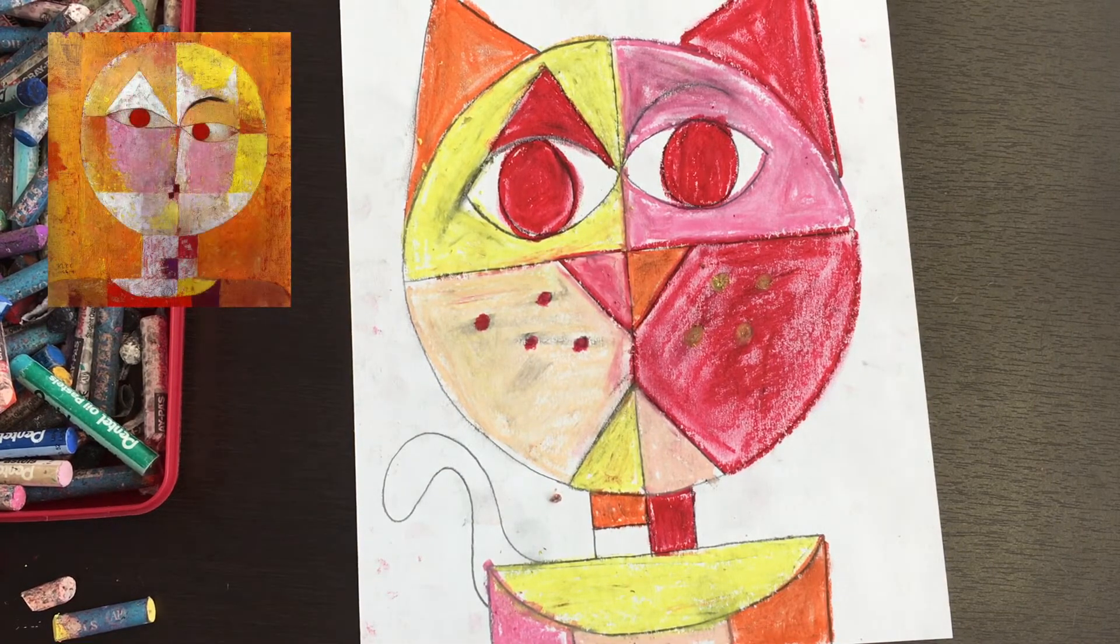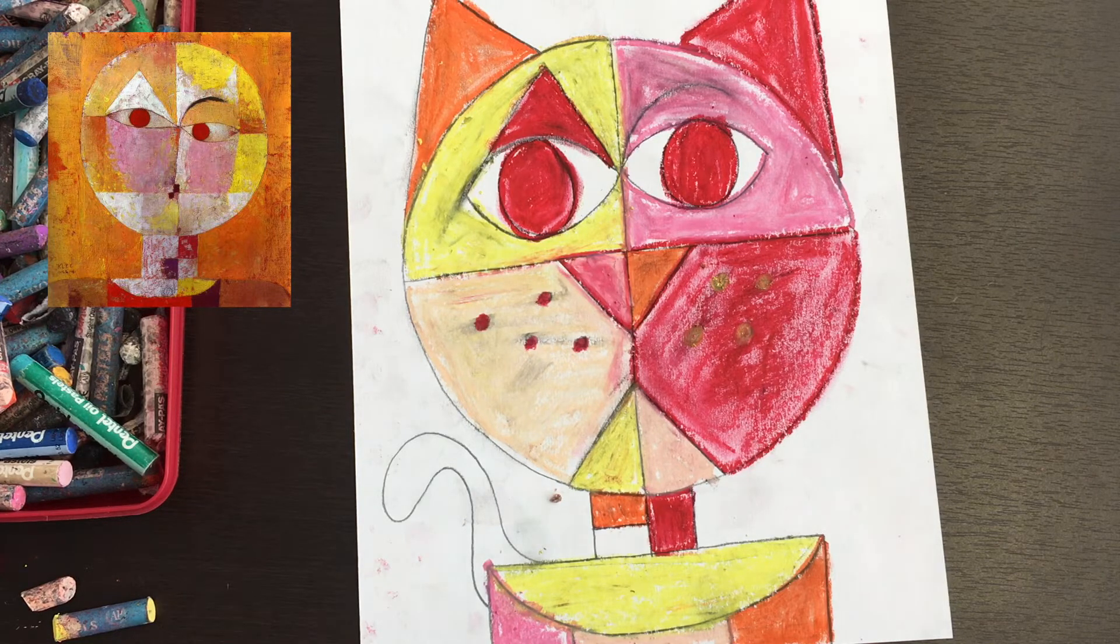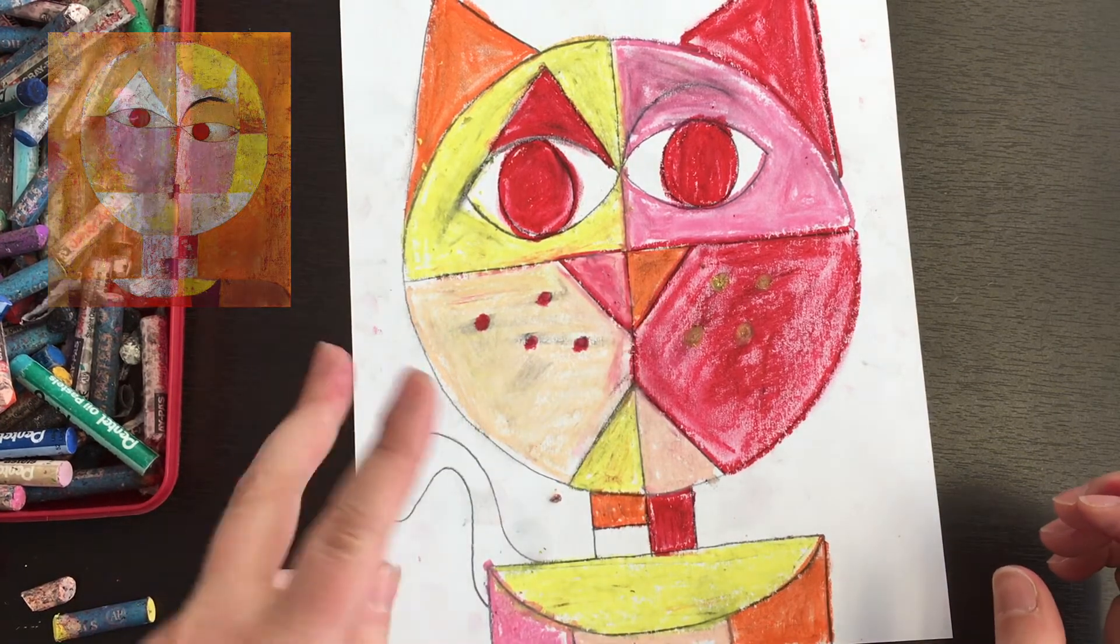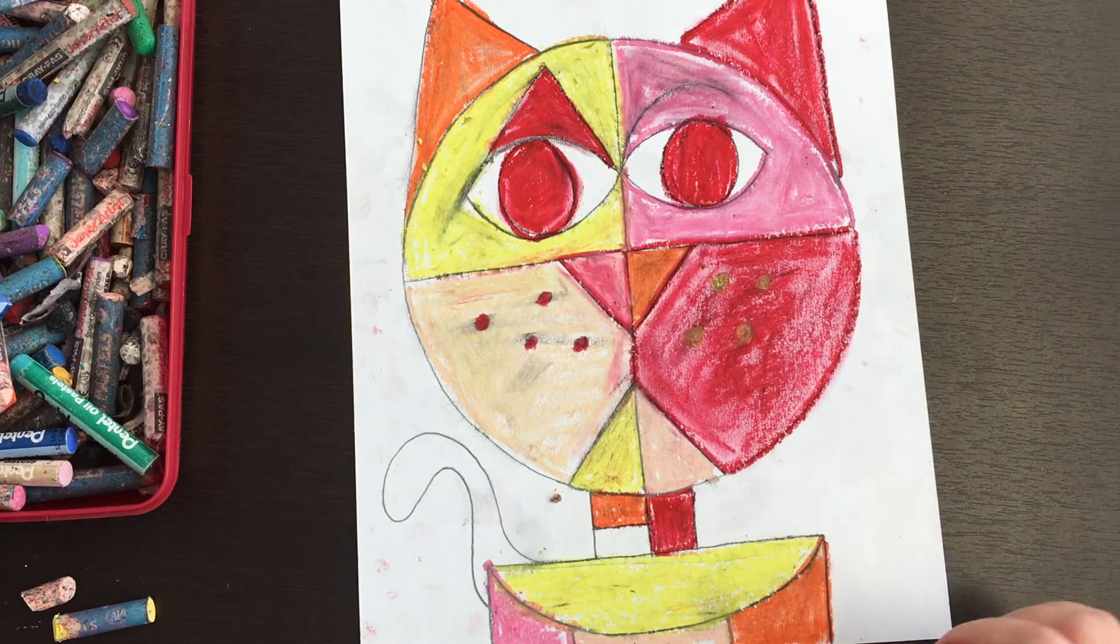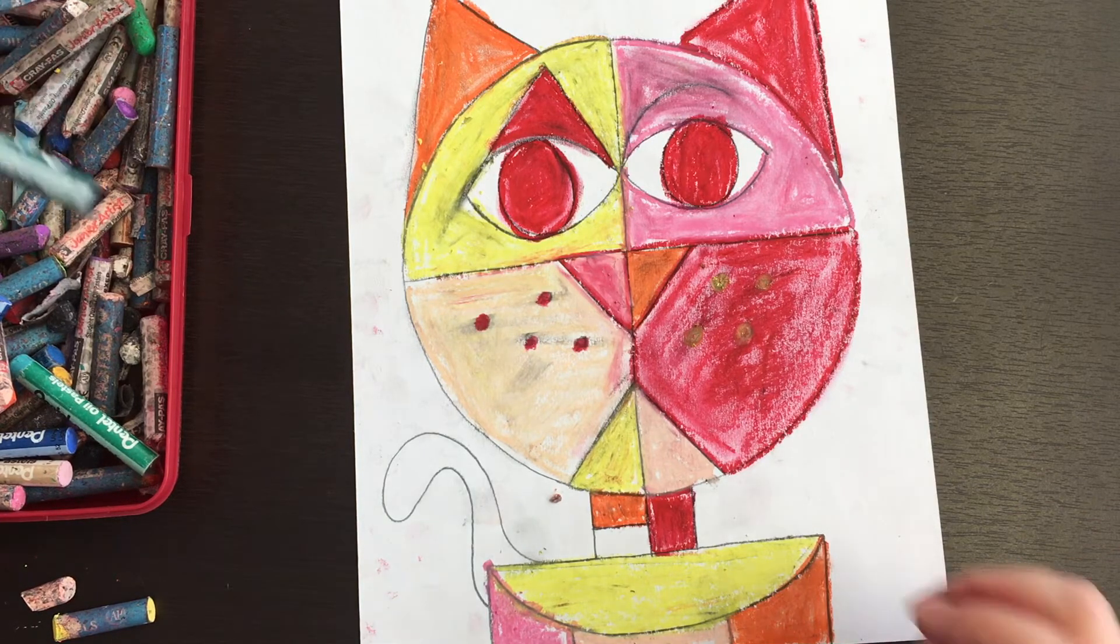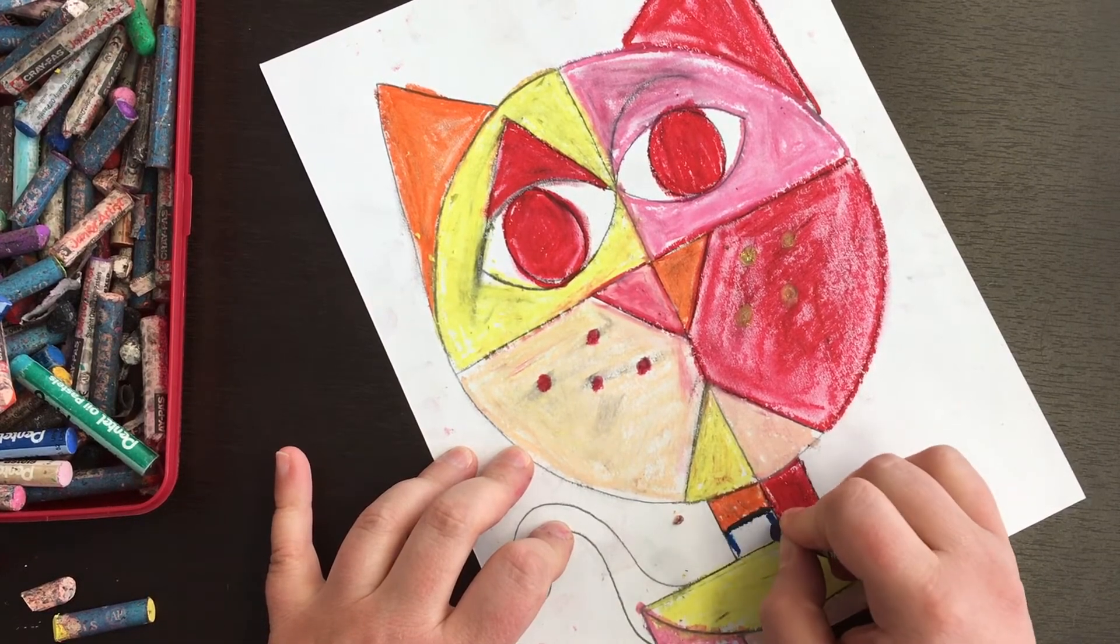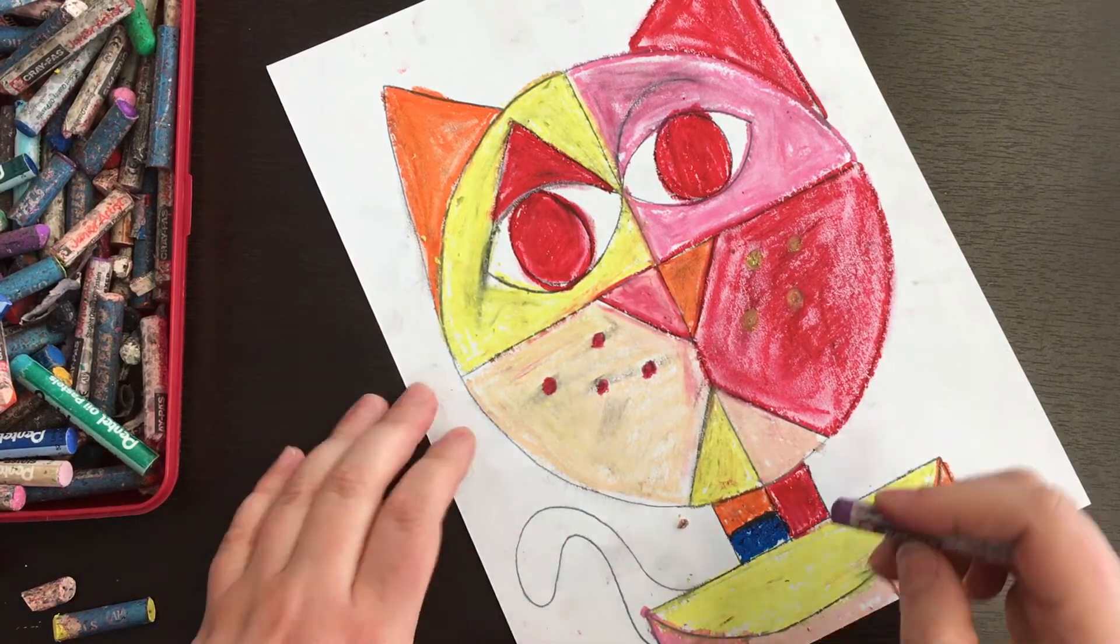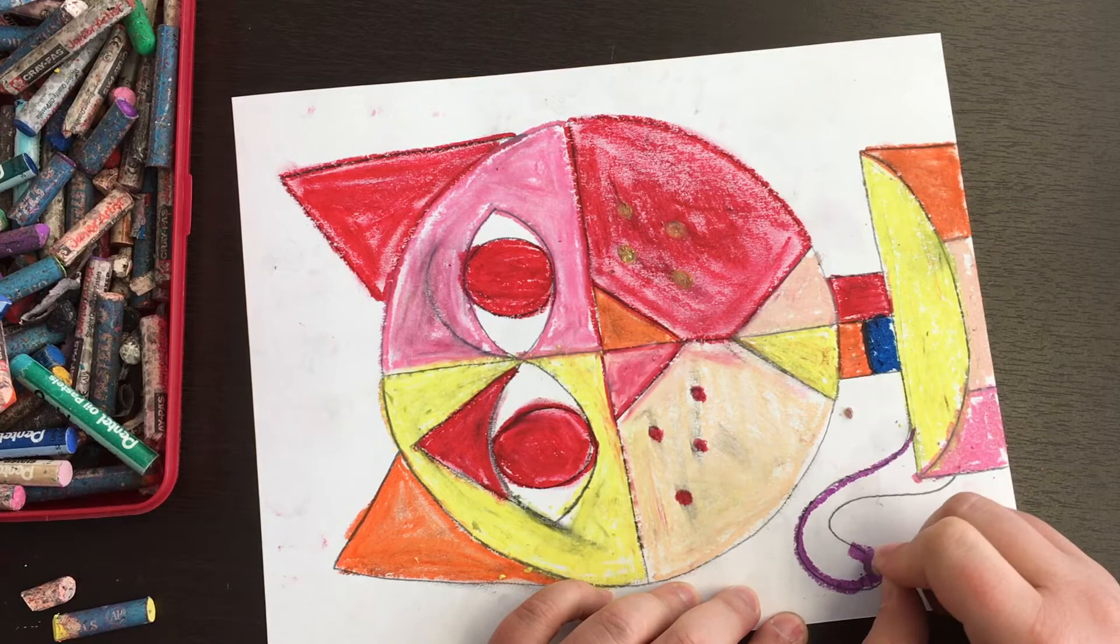And so, in Mr. Klee's Senecio, he's got a couple pops of cool colors. And so we're gonna do the same. So I've left two spots blank. You're gonna put cool colors in two spots. And so cool colors are like blues and greens and purples. So I think I'm gonna drop in some blue right here, and then I'm gonna drop in some purple right here, and then I'm officially done coloring.